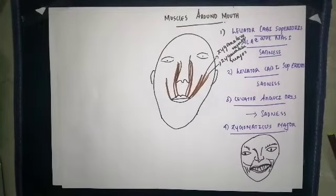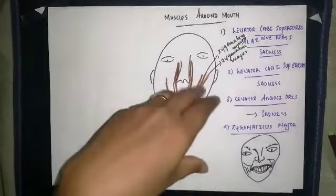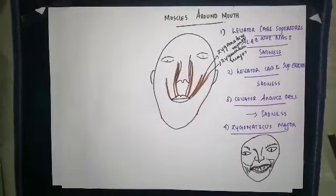Zygomaticus major originates from the zygomatic bone and gets inserted into the angle of the mouth. When this muscle contracts you are able to make the expression of smiling and laughing. So the muscle helping in smiling and laughing is zygomaticus major.